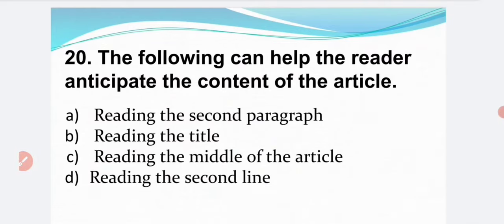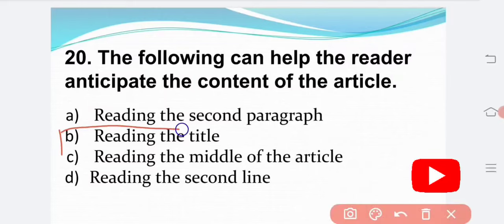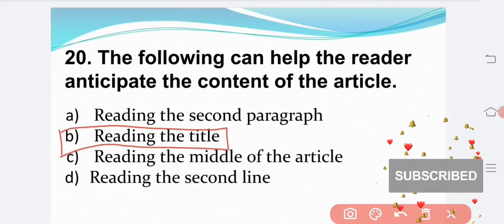Question 20. The following can help the reader anticipate the content of the article: Option A — reading the second paragraph. Option B — reading the title. Option C — reading the middle of the article. Option D — reading the second line. The correct answer is Option B: reading the title.